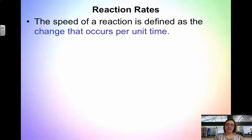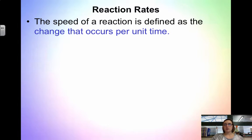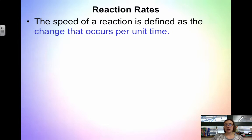For reaction rates, a rate is the speed of a reaction — it's defined as the change that occurs per unit of time. When we measure how fast something occurs, or more specifically the rate, we usually express the measurement as a change in something per unit of time. For example, we measure the speed of a car in miles per hour — a quantity per unit of time. We report these in units that represent the change in what we're measuring divided by the change in time.